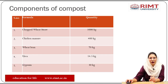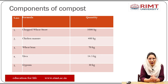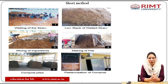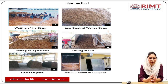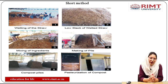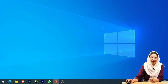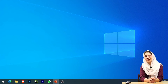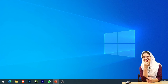In the short method, we again use the same components: chopped wheat straw, chicken manure, wheat bran, urea, and gypsum. The steps include wetting of the straw, then low stacking of wetted straw, mixing of ingredients, and making of piles — the same process as in the long method. After composting of piles, pasteurization of the compost takes place in the pasteurization chamber.